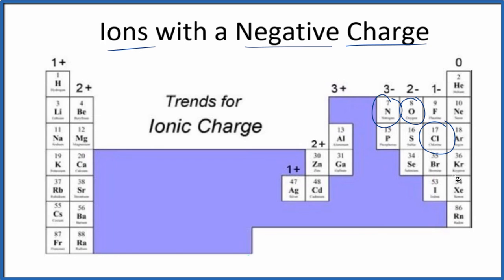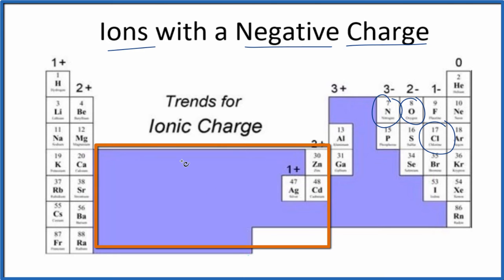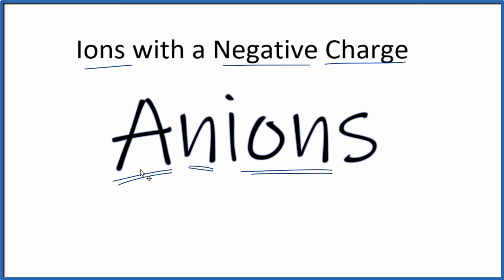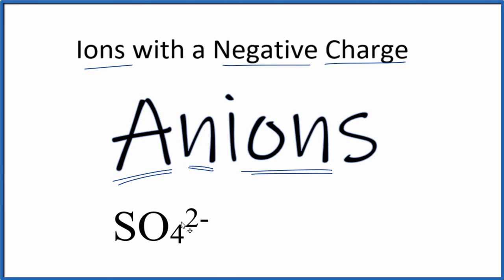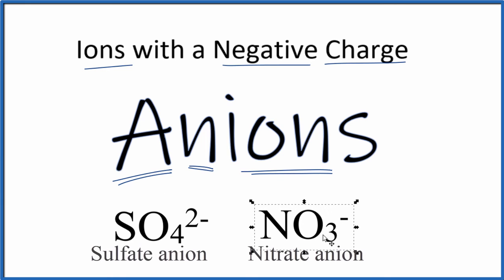This is a helpful trend to understand in chemistry when you're trying to figure out the charges on ions. Note that all of the transition metals here are positive ions. We also have polyatomic ions, and they can be anions as well. The sulfate ion, SO₄²⁻, is an anion because it has a negative charge. Same with nitrate, NO₃⁻ — this is also an anion. There are quite a few of these polyatomic anions.